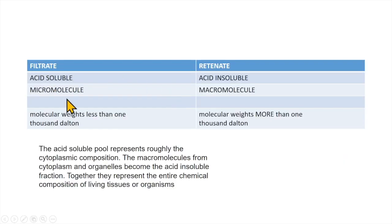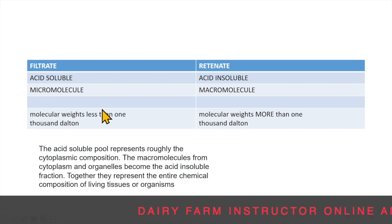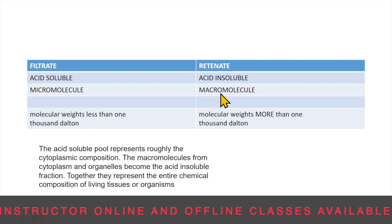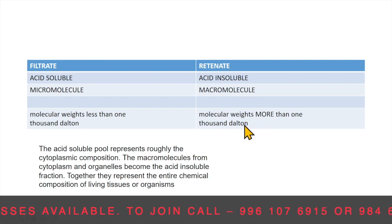Now let's study what are the components of filtrate and retinate. Filtrate is the acid soluble pool — it contains micro molecules with molecular weight less than 1000 Dalton. Retinate is the acid insoluble fraction — it contains macromolecules or large compounds with molecular weight more than 1000 Dalton.